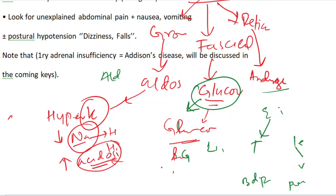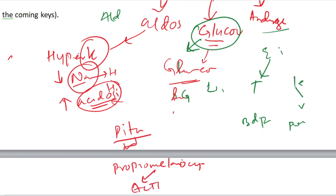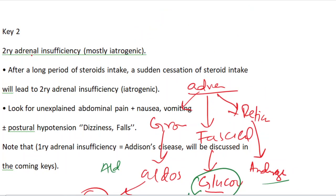There is also skin hyperpigmentation. The pituitary releases a substance called pro-opiomelanocortin (POMC), which can be converted into ACTH or MSH. When adrenal hormones are deficient, the body tries to compensate by increasing ACTH. Along with increased ACTH, MSH is also produced, which leads to increased hyperpigmentation.